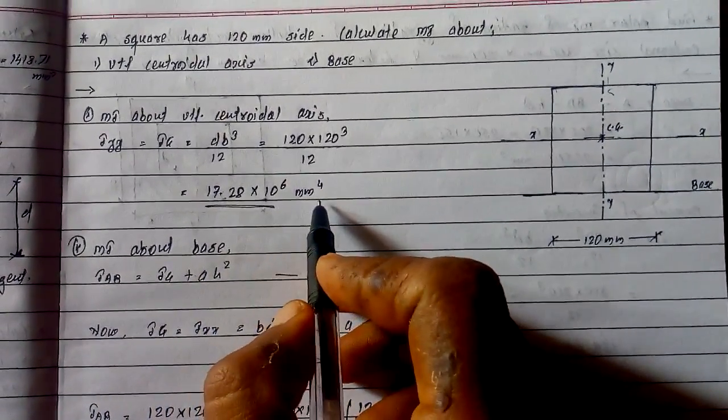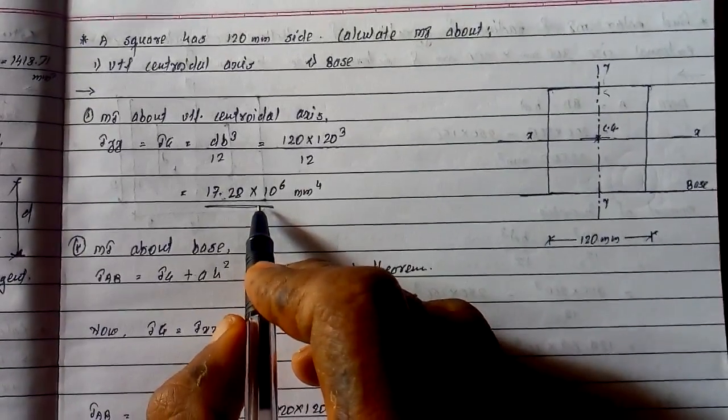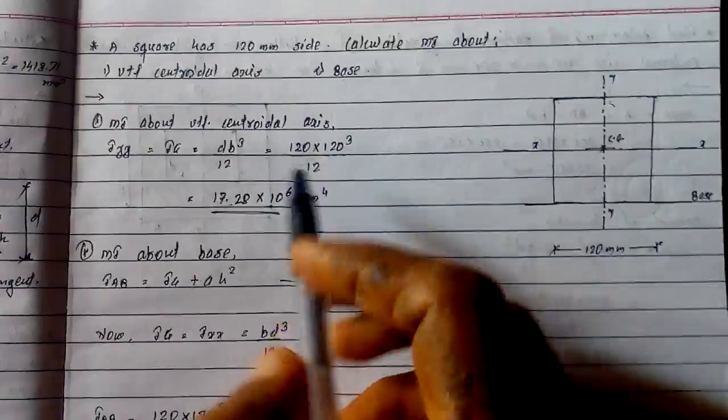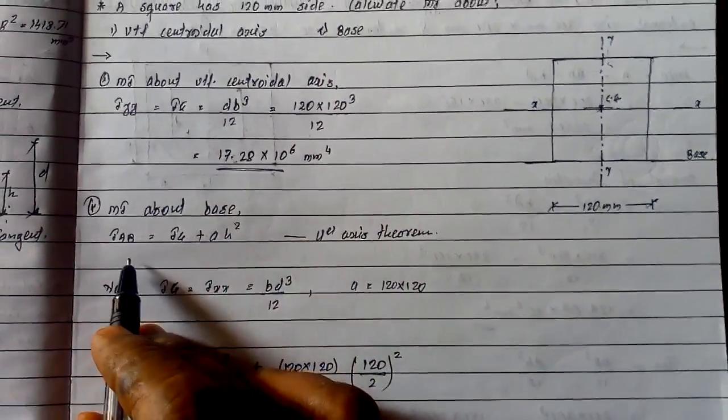This is moment of inertia about vertical centroidal axis. Second one, we need to calculate moment of inertia about base.